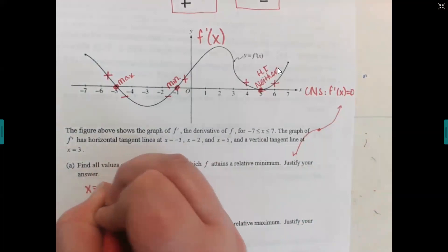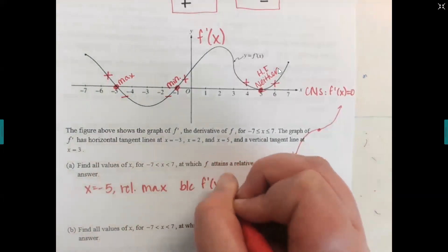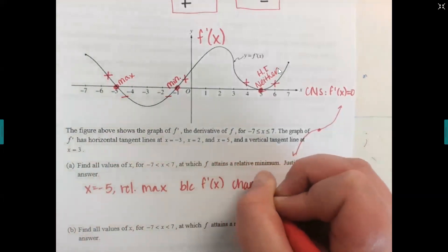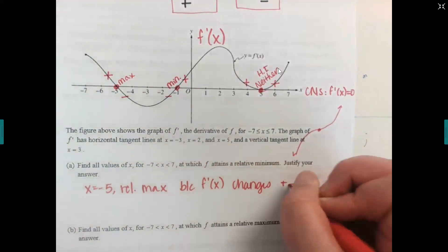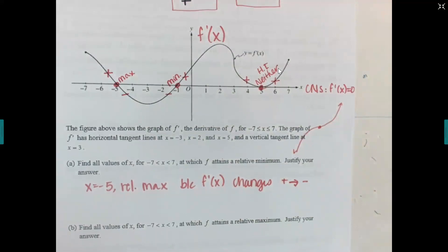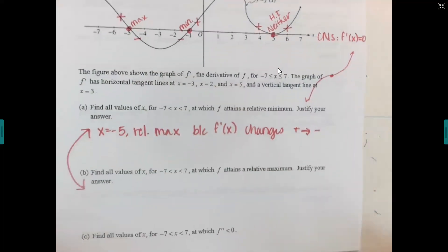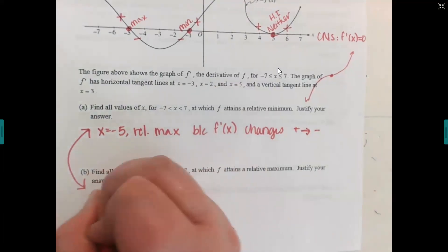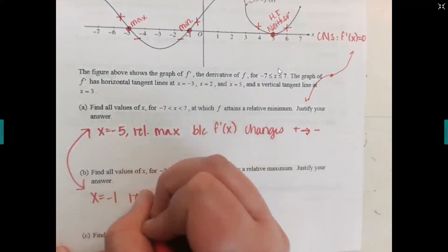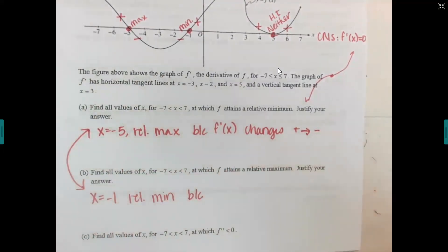So the relative max is at x equals negative five, because the graph of f prime changes from plus to minus. The relative min is at x equals negative one, and instead of plus to minus, it goes minus to plus for a min.